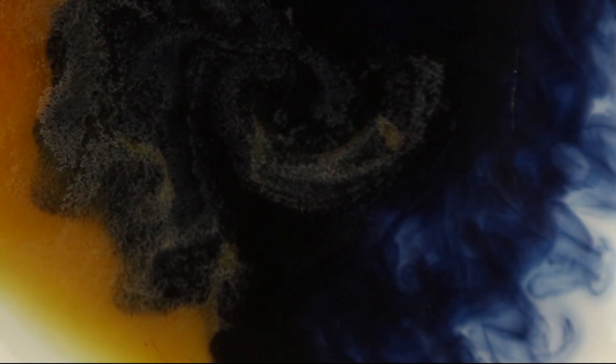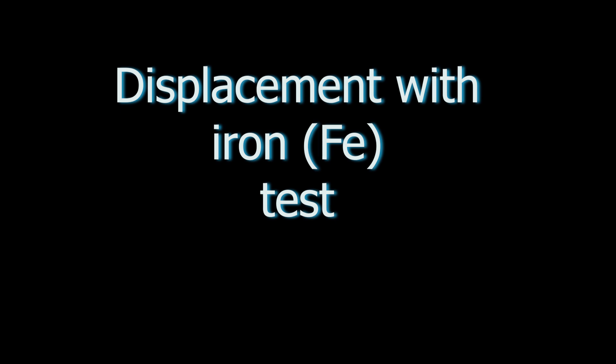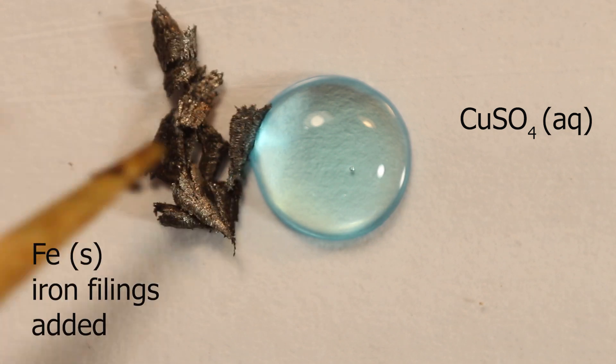Now the most direct test for the presence of copper II ions is just to get copper metal out of them. And for that we use iron filings here.